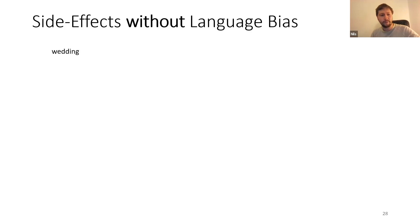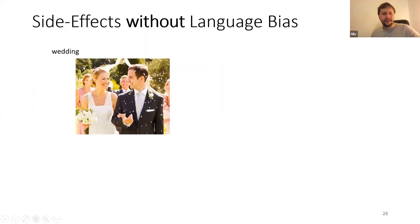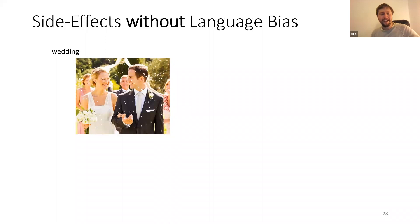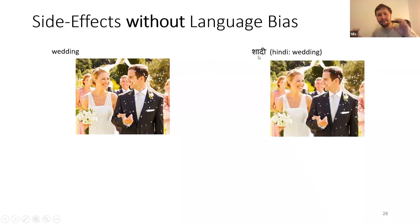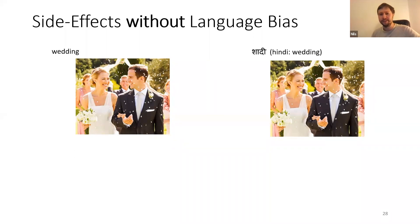You might think a model without language bias is better — finding the perfect document regardless of language. But the challenge is things that are specific to languages, which are tightly coupled with countries. For example, if I search in English for 'wedding' in an image search system, I expect a traditional western picture — a bride in a white dress, a man in a suit. But if the model has no language information and I search using the Hindi word for wedding, it will retrieve the same western result, which is probably not what someone searching in Hindi would want.